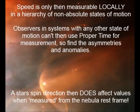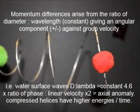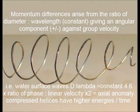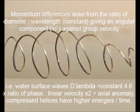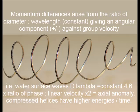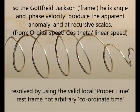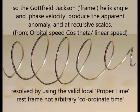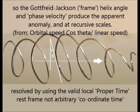Speed is only then measurable locally in a hierarchy of non-absolute states of motion. Observers in systems with other states of motion can't use proper time, so find the asymmetries and anomalies. A star spin direction then affects values found when measured from a nebula rest frame. Momentum differences arise from the polarity or phase velocity difference. The ratio diameter to wavelength is constant in water surface waves at 4.6. This is not a real speed when measured in the local frame, so must simply be subtracted. The Godfrey-Jackson helix angle and phase group velocity ratio give the anomalies at recursive scales.